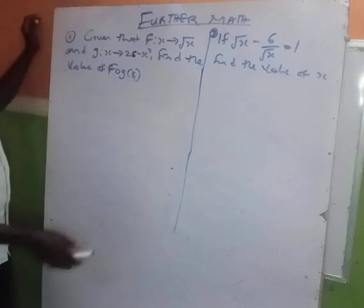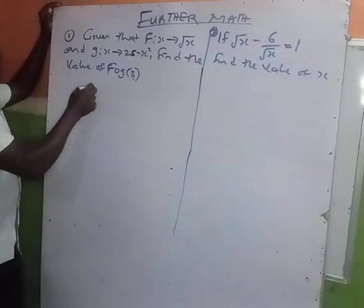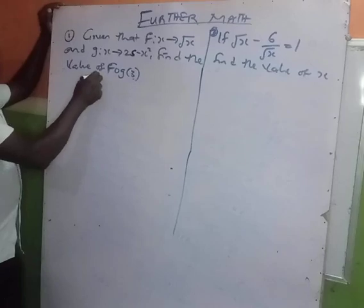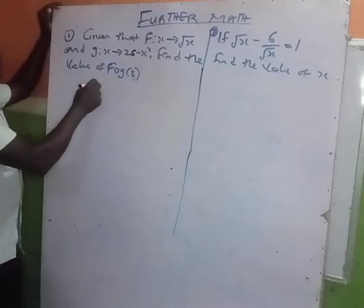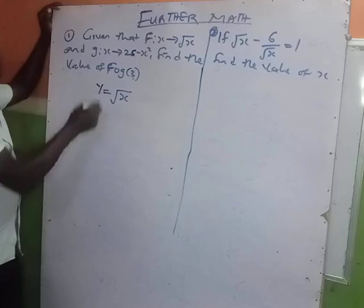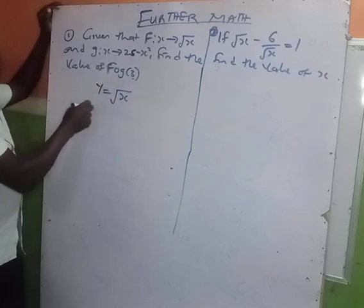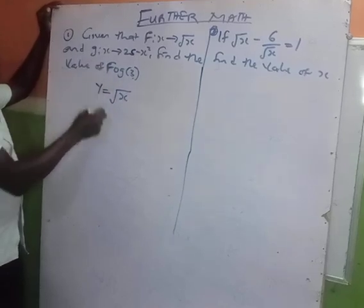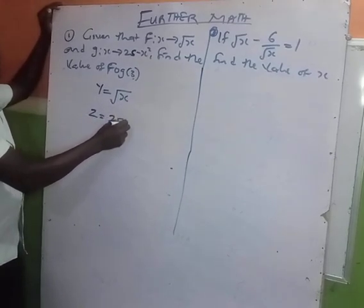So what are we going to do? We can call f(x) = y, so y = √x. Then we call g as z, so z = 25 - x².